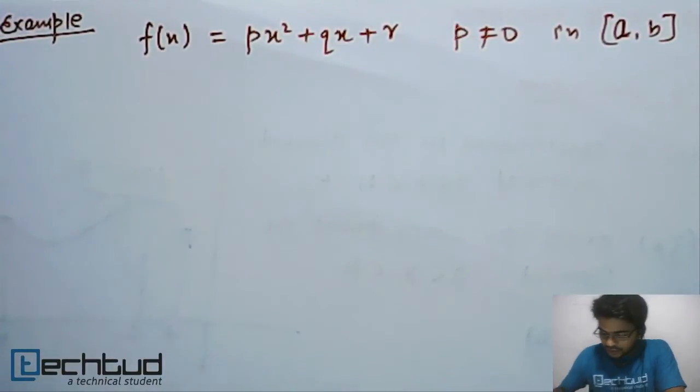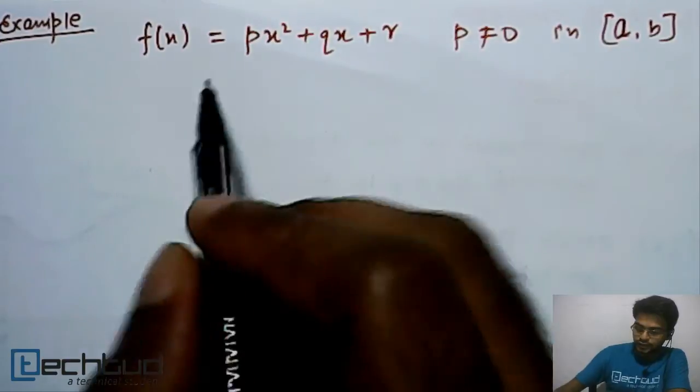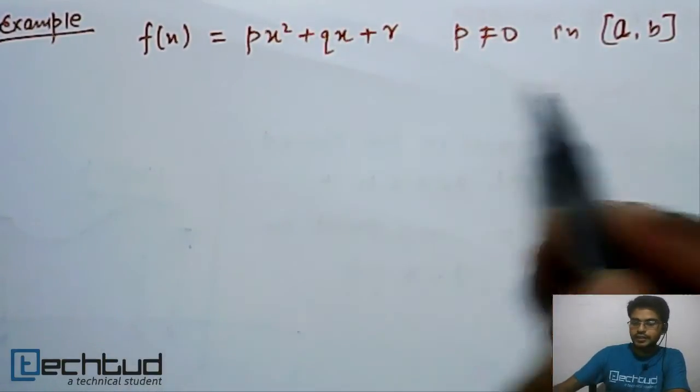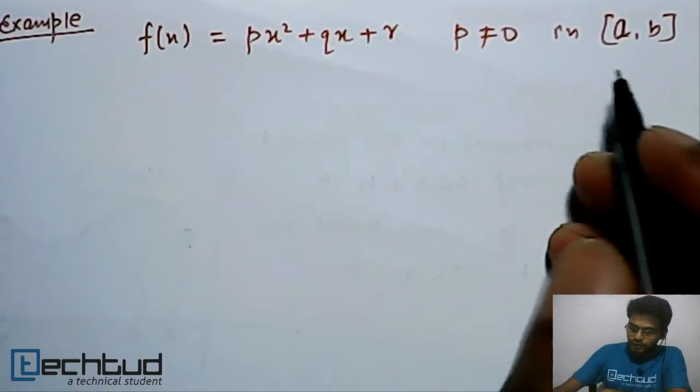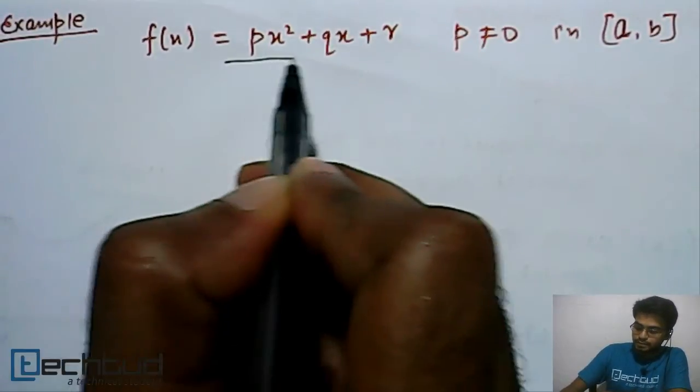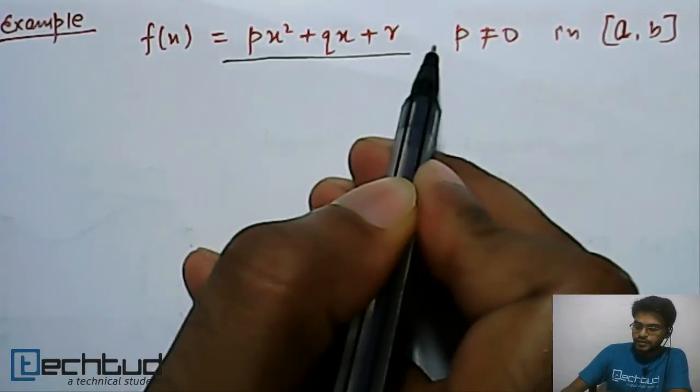The question is to verify the Lagrange mean value theorem for the given function in an interval [a, b]. The given function is px² + qx + r.